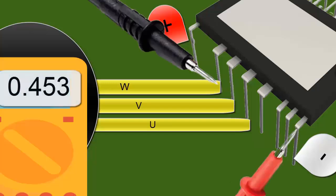Place the red probe of the multimeter on the negative input of the IPM electronic circuit. Use the black probe to measure the points UVW.